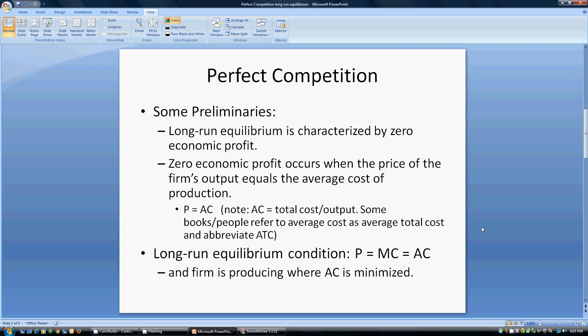This means firms are making a normal rate of return. Zero economic profit occurs when the price of the firm's output equals the average cost of production. When price equals average cost, the firm is making zero economic profit. It might be selling a unit for $10, but on average it costs the firm $10 to make. In that case, the firm is not making any economic profit.